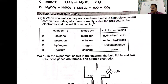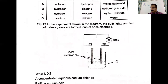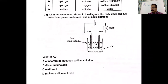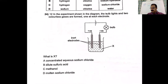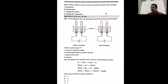The next question — the bulb lights and two colorless gases are formed at each electrode — is a repeat question. We have already discussed it. The answer is B.